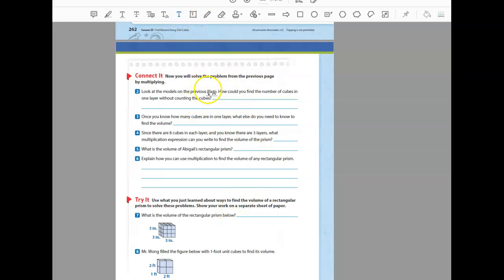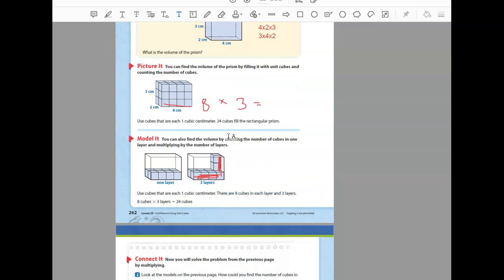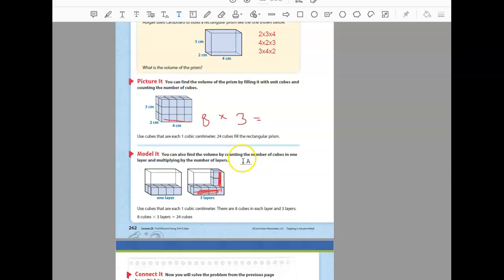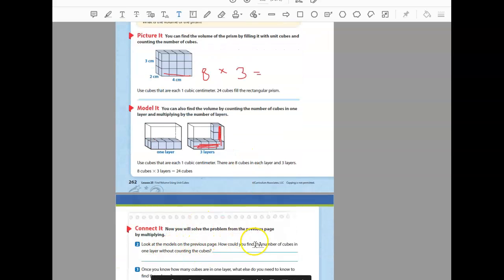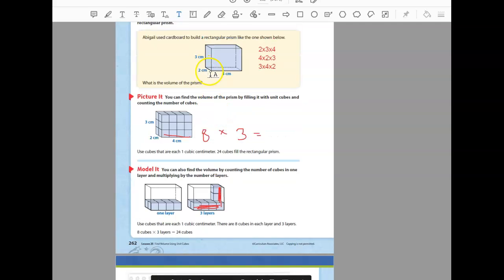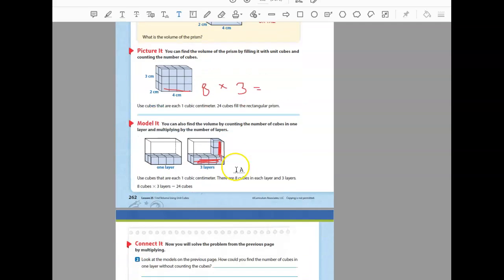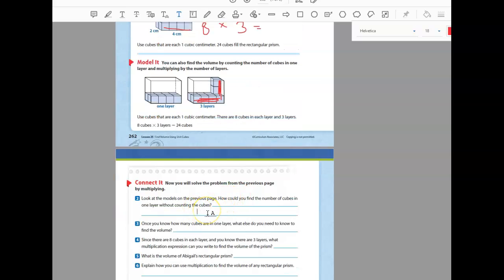Next, you will solve some problems from the previous page. Look at the models on the previous page. How could you find the number of cubes in one layer without counting the cubes? If it's two deep and four wide, you could multiply two times four. So I don't have to count. I know that two times four equals eight.